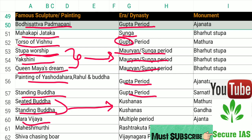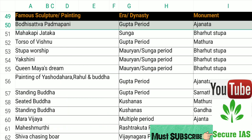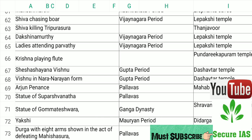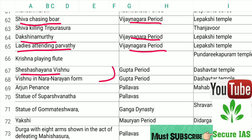Mara Vijaya is related to multiple periods. Mahesh Murti belongs to the Rashtrakuta period. Shiva Chasing Board and Dakshinamurti are from the Vijayanagara period. Ladies Attending Parvati is also from the Vijayanagara period. During the Gupta period, Shesha Shayana Vishnu — Vishnu in Narayana form — was created.